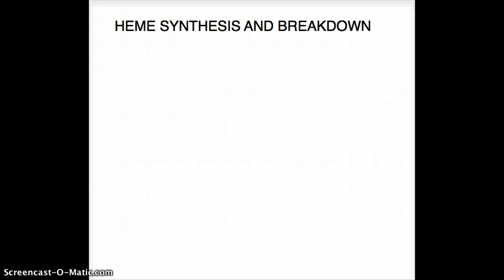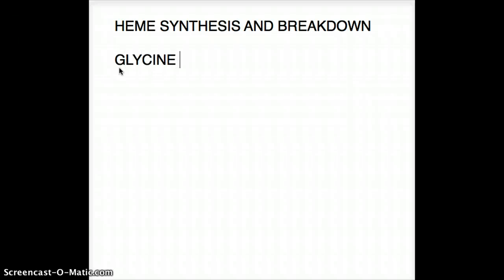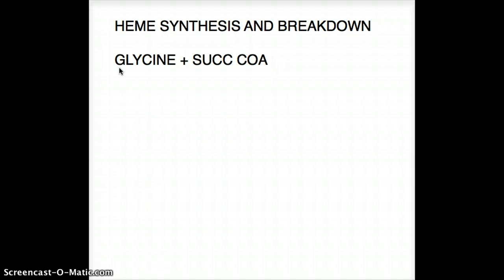Hello friends, let's go over heme synthesis and its breakdown. Heme is synthesized using the amino acid glycine, which combines with succinyl-CoA to give us a product called delta-ALA.